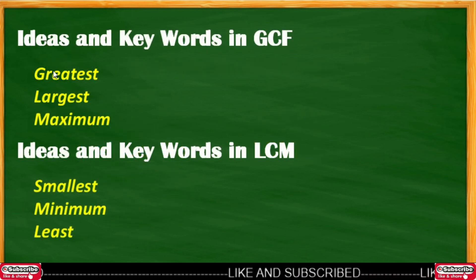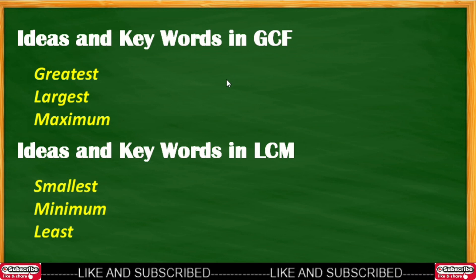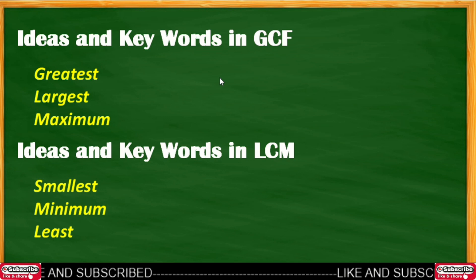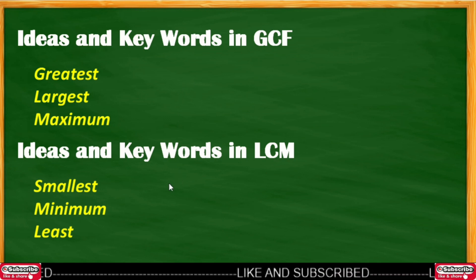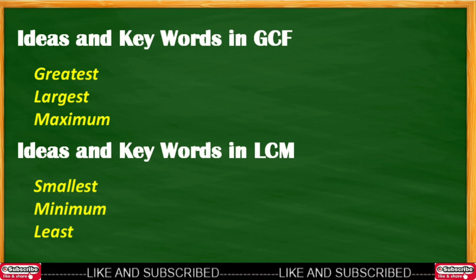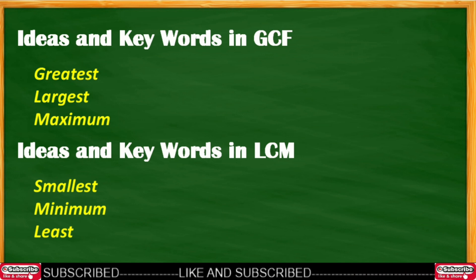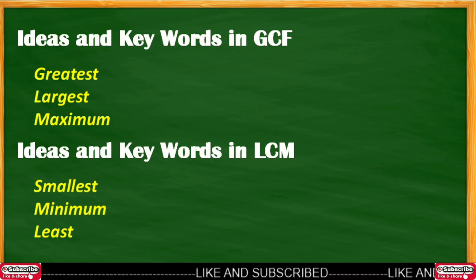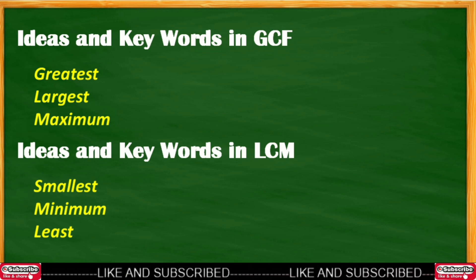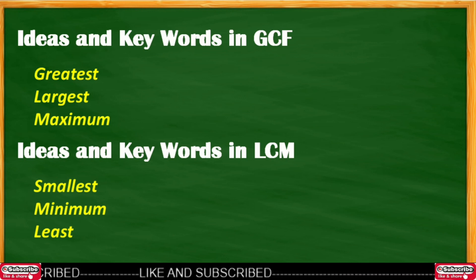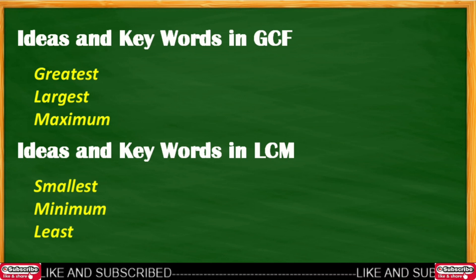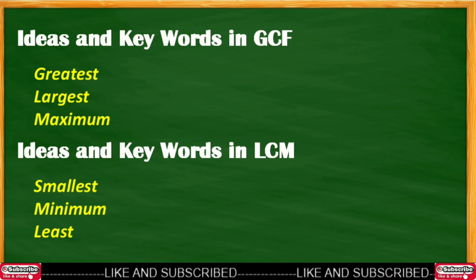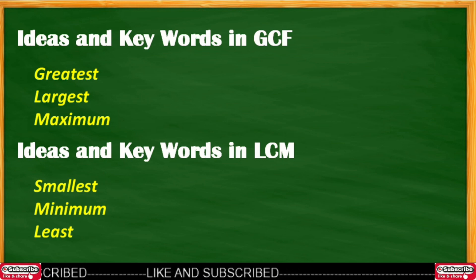Here are some ideas and keywords in finding if the problem is involving GCF or LCM. For GCF, we have the keywords: greatest, largest, and maximum. While for LCM, we have: smallest, minimum, and at least or least. These are the keywords that help easily identify if the problem is involving GCF or LCM.